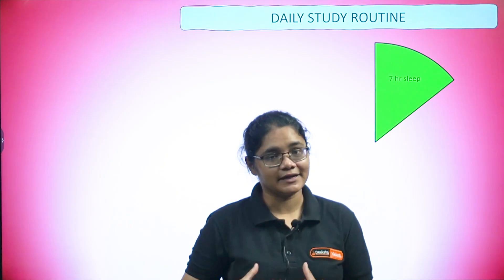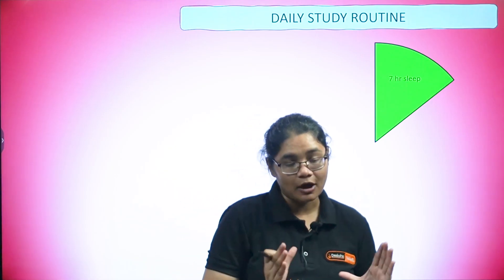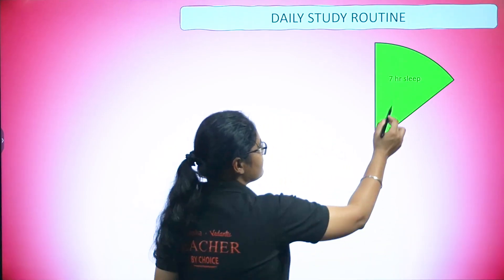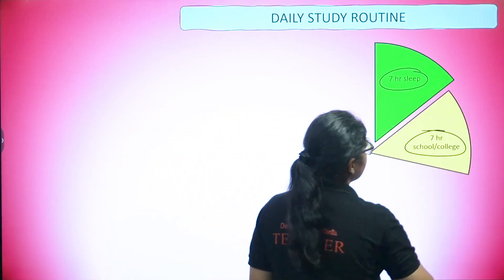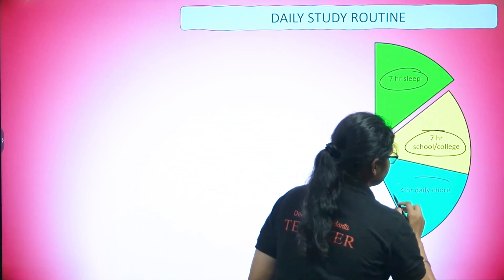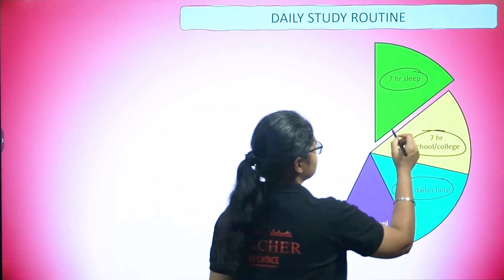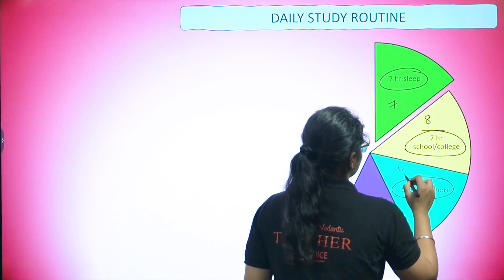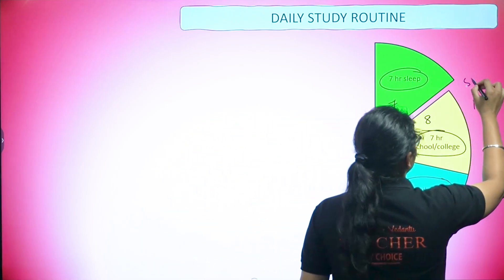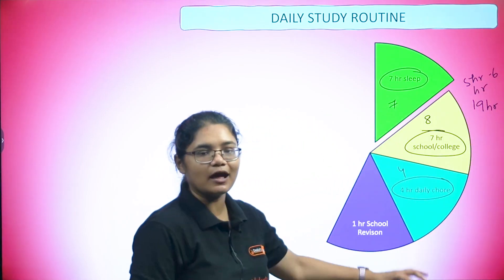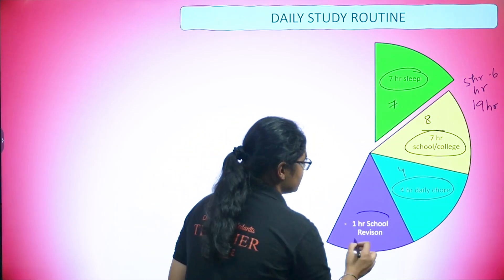For your daily study routine, first understand how your time is being spent. Seven hours should go to proper sleep — that's very important for productivity. The next seven hours will be spent in school or college. Then approximately four hours go to daily coaching, which can be up to eight hours for some students. That accounts for roughly 19 hours, leaving you with five to six hours for self-study.